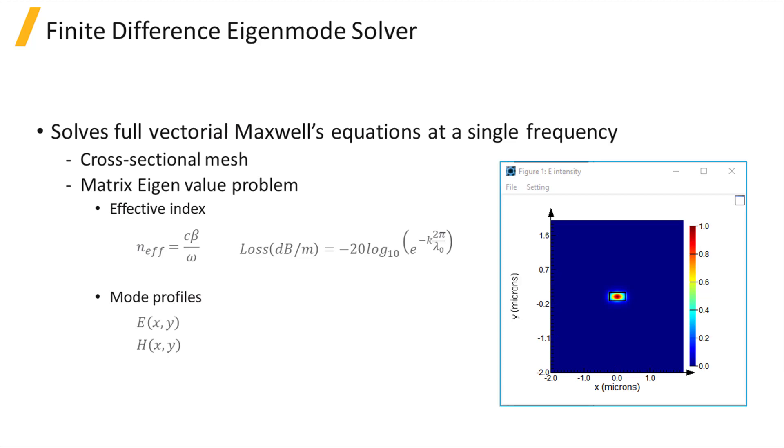Note that the mode loss can be calculated from the imaginary part of the effective index. Furthermore, the fields are normalized such that the peak electric field intensity is equal to 1.